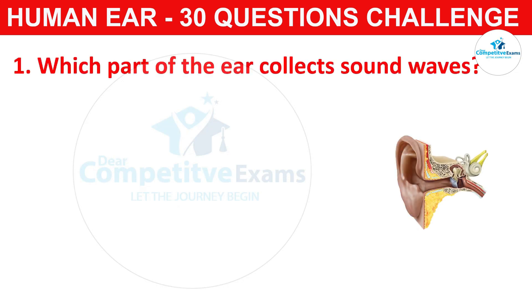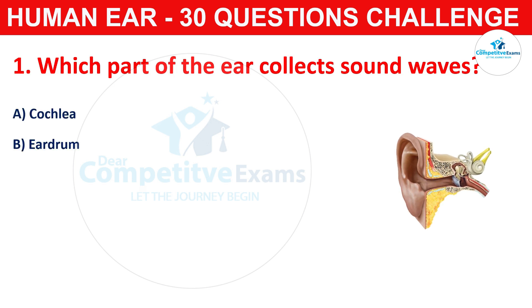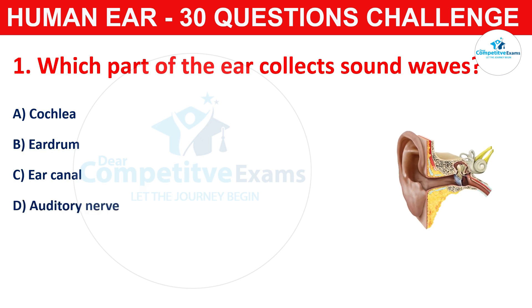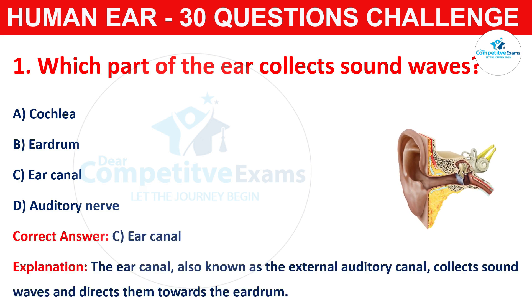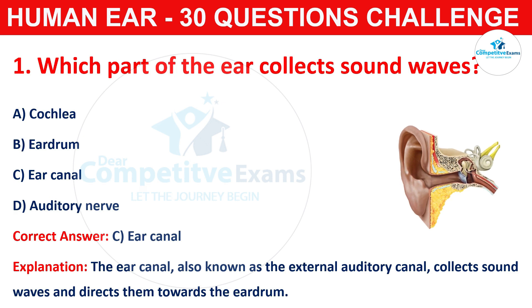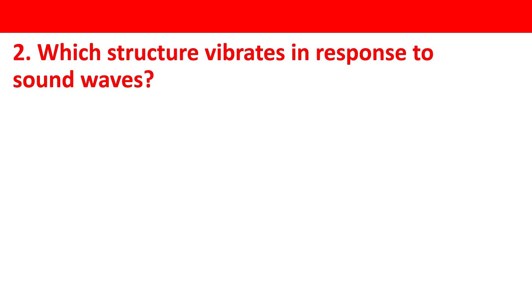Which part of the ear collects sound waves? Your options are cochlea, eardrum, ear canal, or auditory nerve. The correct answer is C, that is ear canal. The ear canal, also known as the external auditory canal, collects sound waves and directs them towards the eardrum.